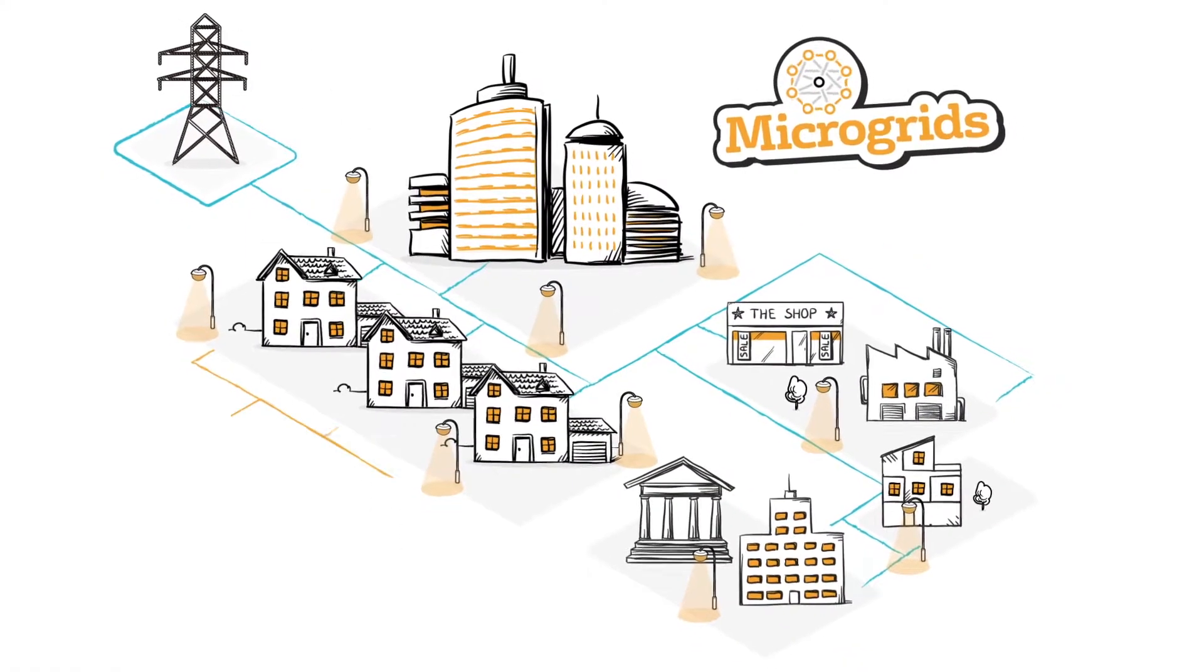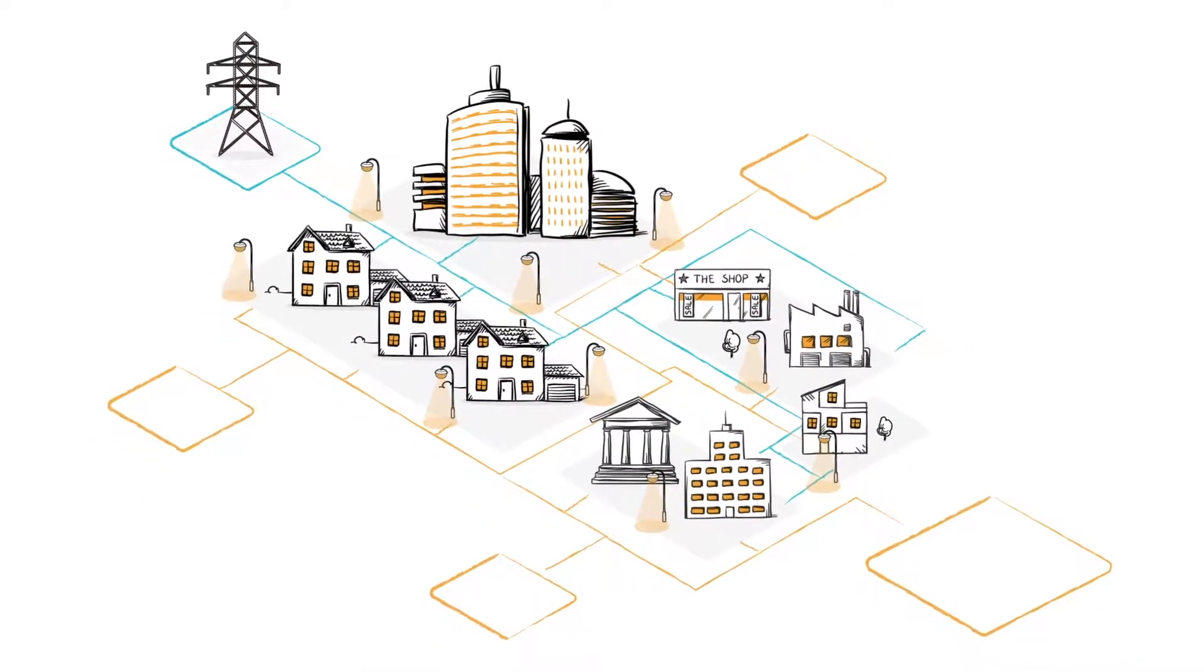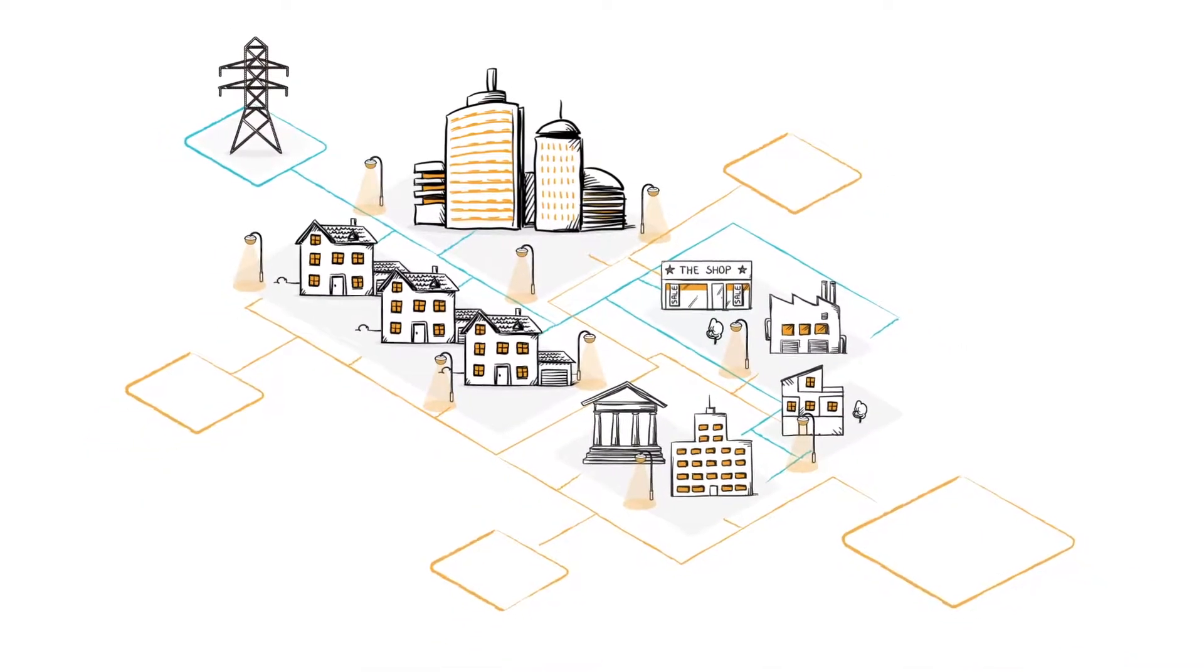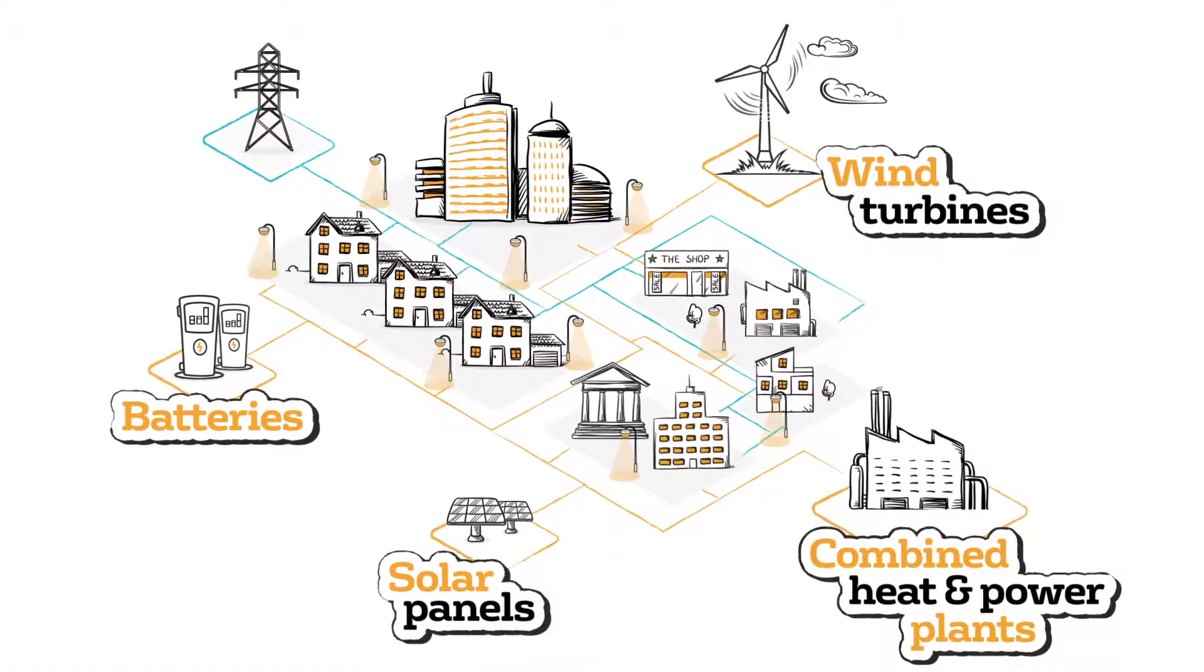A microgrid is a group of interconnected energy users and distributed energy resources. These are energy systems that can include solar panels, batteries, wind turbines, and combined heat and power plants.